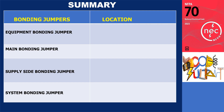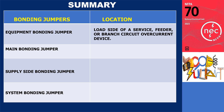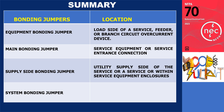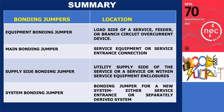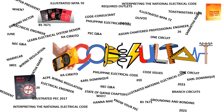In summary, the equipment bonding jumper is typically located at the load-side of a service, feeder, or branch circuit overcurrent device. The main bonding jumper is found at the service equipment or service entrance connection. The supply-side bonding jumper is positioned at the utility supply side of the service or within service equipment enclosures. Lastly, the system bonding jumper is installed as a bonding jumper for a new system, either at the service entrance or in a separately derived system. Understanding the various types of bonding and their significance is crucial for electrical safety and compliance with the code. Thank you for joining us on the Codesultant channel. Stay tuned for more valuable information on Electrical Code Rules and Best Practices.